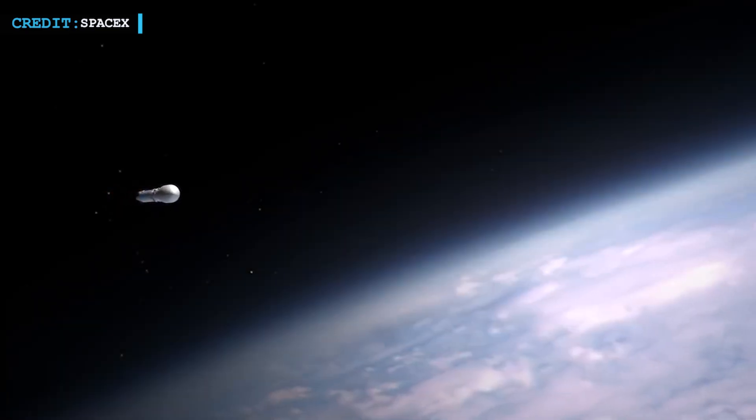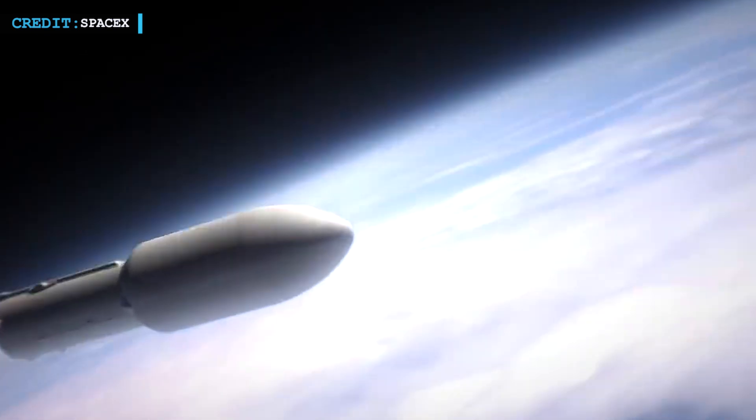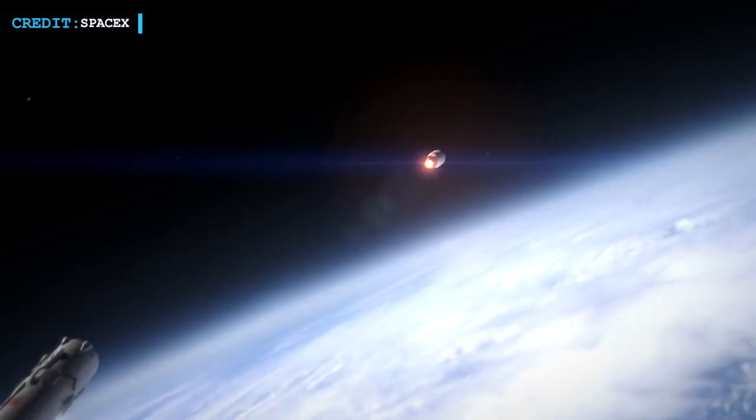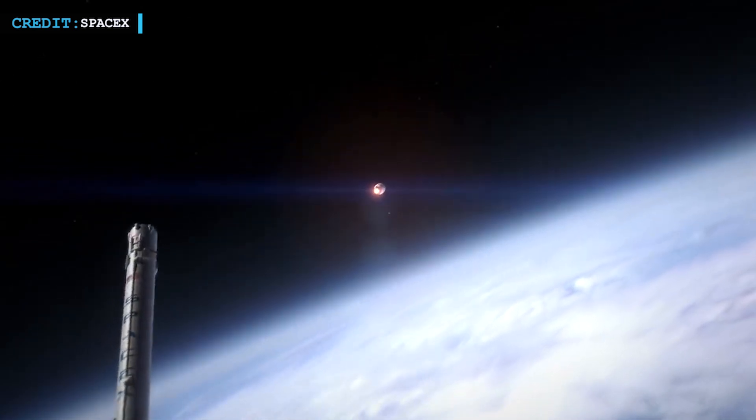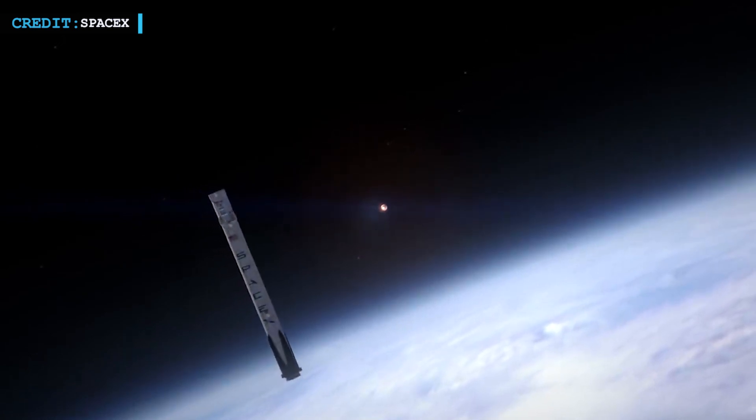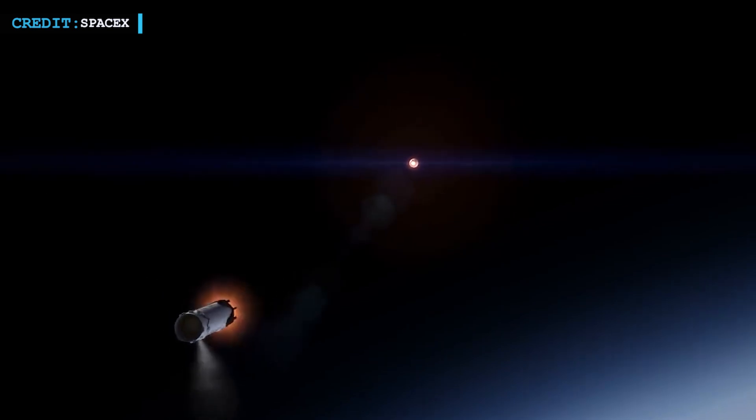According to reports, the USSF-44 was SpaceX's first attempt to carry out a direct launch to the geostationary orbit, which is almost 36,000 km above Earth's surface. Moreover, other than directly launching to geostationary orbit, this is the first time SpaceX intentionally expends a Falcon Heavy booster, as this mission comprises an expendable center core.